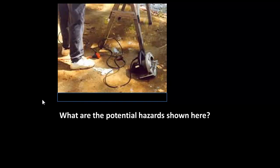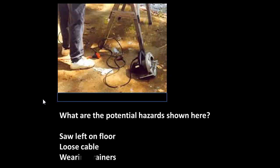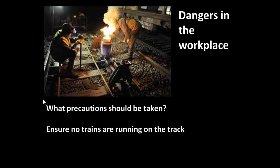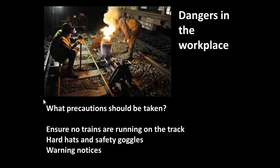Here's a fairly easy one. There are some potential hazards shown in this picture: a saw being left on the floor, a loose cable dragging across the floor, and wearing trainers is not exactly the ideal footwear for someone working in construction. What precautions should be taken? There's another typical workplace — workers repairing something on a rail line. The obvious one is that you should ensure there are no trains running on the track. Hard hats and safety goggles would be useful, and a few warning notices — and you could probably think of others as well.